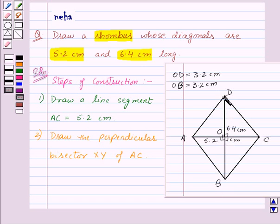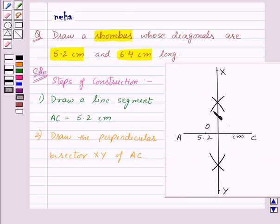the intersection point of XY and AC is O. Now, we know that OD is 3.2 cm. So, we will take O as center and radius 3.2 cm. We will draw an arc to cut OX at point D. So,